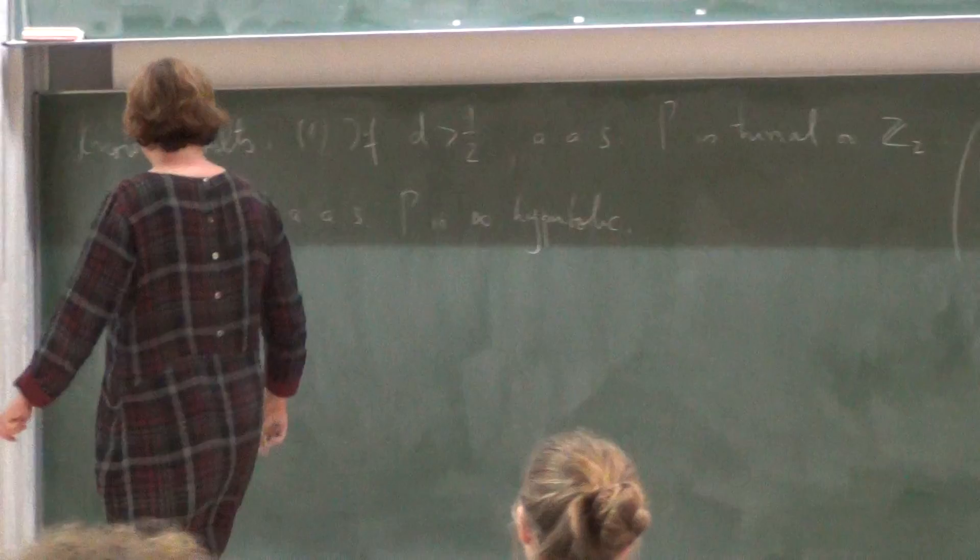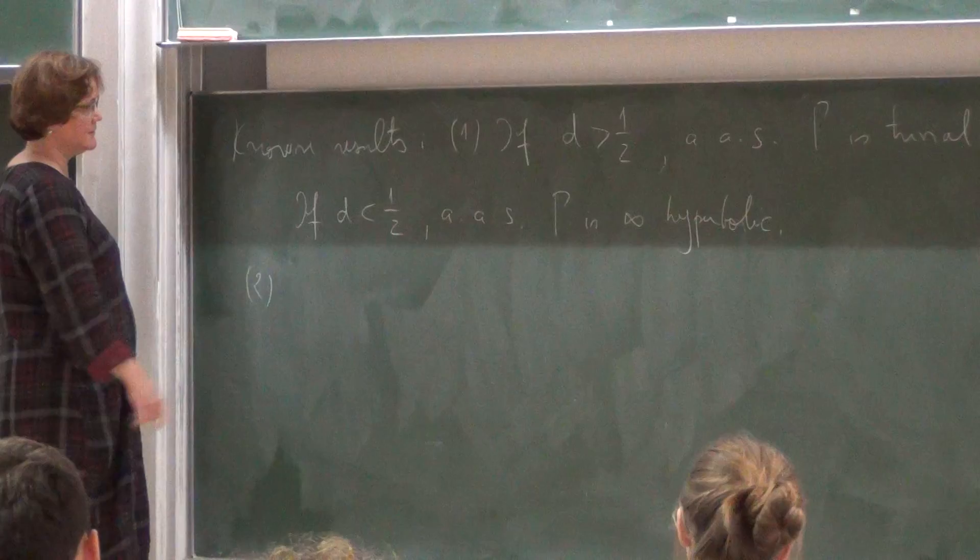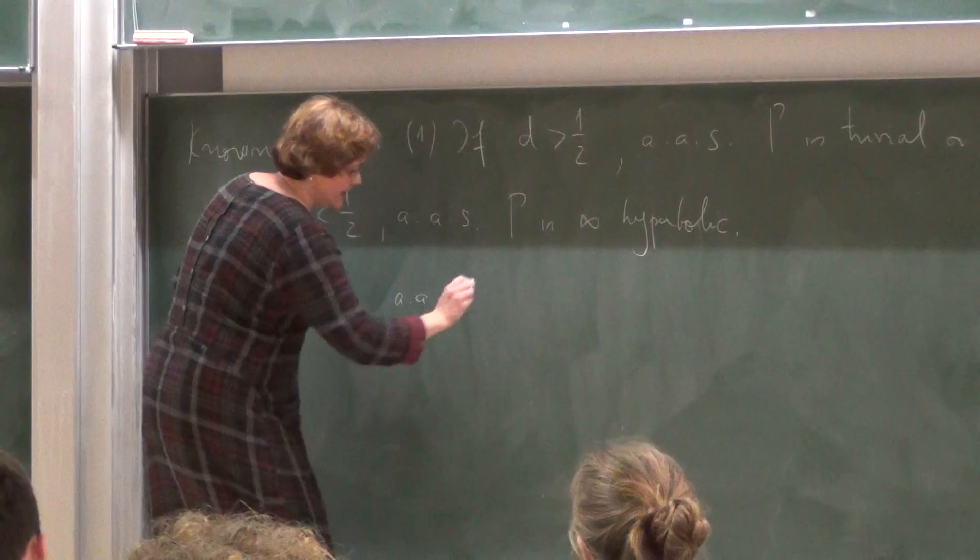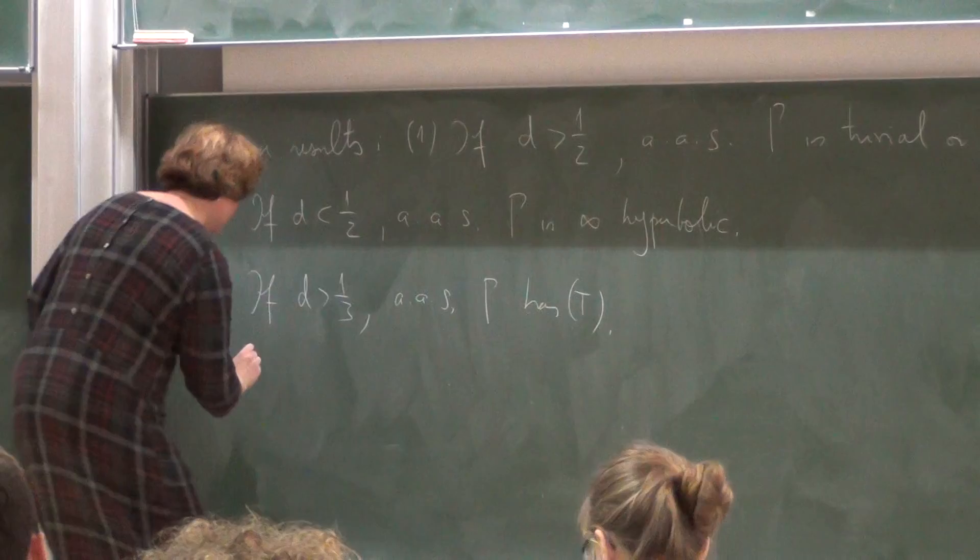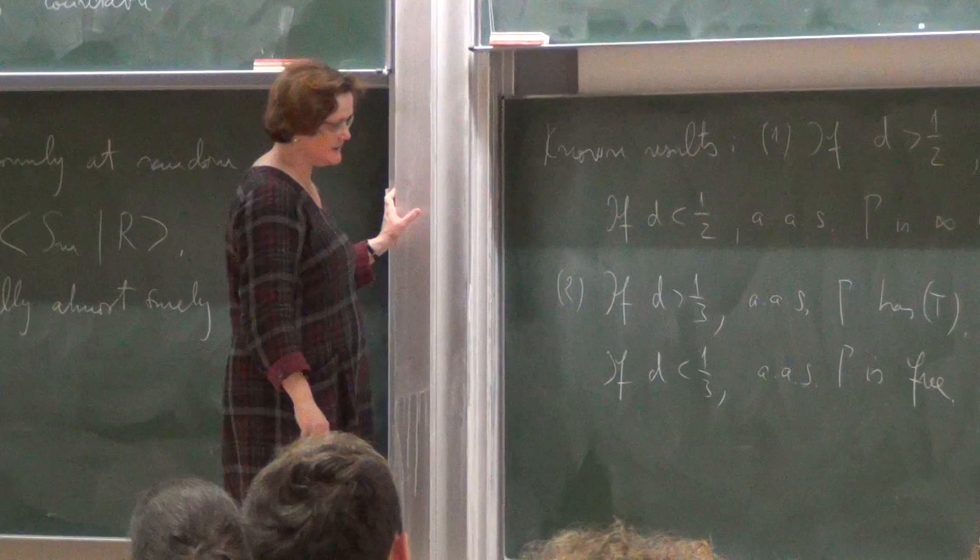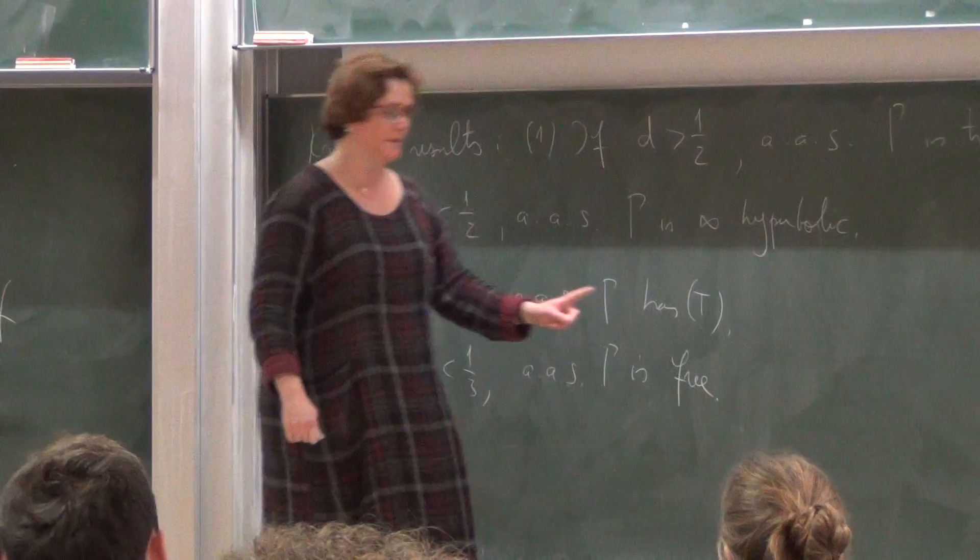So we're looking at M going to infinity, and we look at what properties become generic in the actual practice. All right, so there were a few results. Just to give you the picture, there were a few properties that were proved straight away by Gromov and Zuk, and they are as follows. So first of all, if the density is too large, then asymptotically almost surely the group is trivial. While if the density is less than half, then asymptotically almost surely the group is non-trivial hyperbolic.